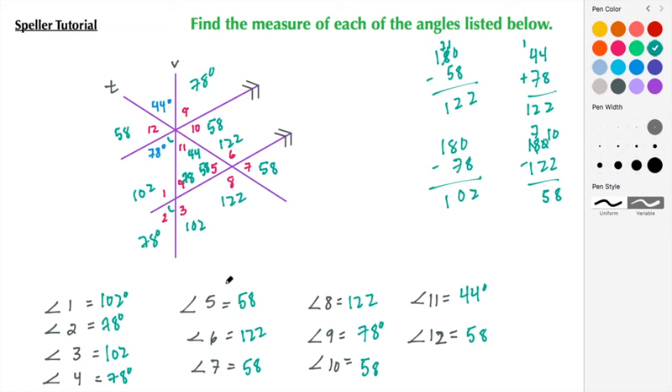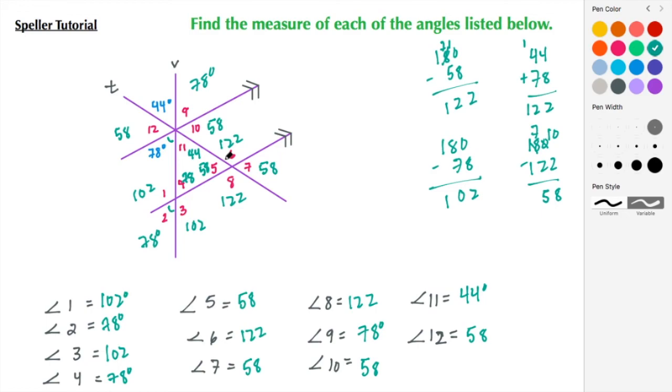All right, and that sums it up. So here we have a set of parallel lines that are intersected by two transversals, and we figured out what all the angles were, or what all the angles are. If you found this content to be helpful, please like, share, and subscribe, and as always, have a great day.